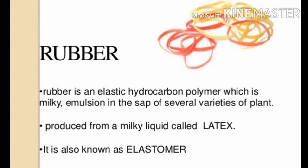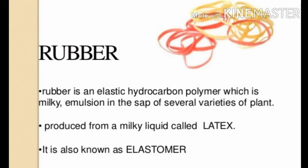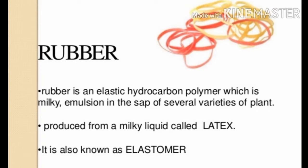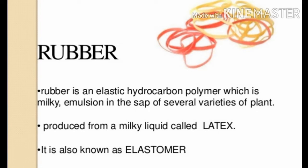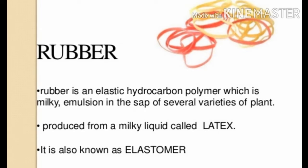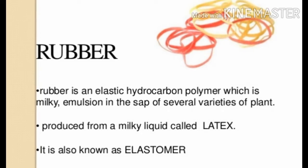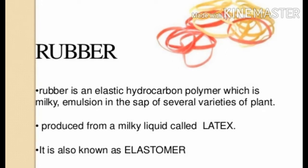Hello students, today we discuss natural rubber. Rubber is an elastic hydrocarbon polymer — that means it contains hydrogen and carbon. In milky form, you will get an emulsion from several varieties of plants. This sticky, milky substance is called latex. The milky liquid you get from the plant is known as an elastomer.